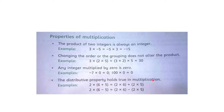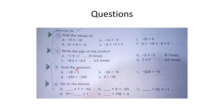Agle property hai: the distributive property holds true in multiplication. Jaise 2 × (6 + 5): pehle 2 ko 6 se multiply karo = 12, phir 2 ko 5 se multiply karo = 10, add karo answer 22. Aur 2 × (6 − 5): 2×6 = 12, 2×5 = 10, 12 minus 10 = 2. Yeh distributive property hai.